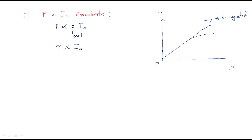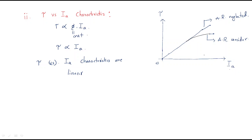The torque versus armature current characteristics are linear — torque varies with armature current in a linear way. When armature reaction is neglected it follows a straight line; when armature reaction is considered, there is some saturation effect causing the curve to bend slightly.